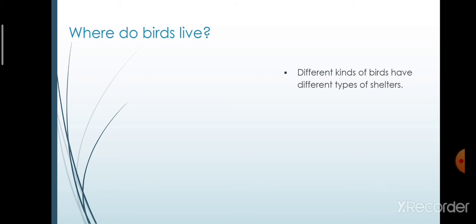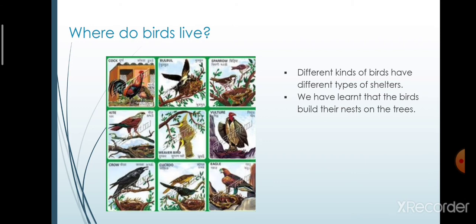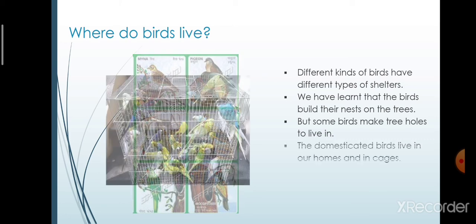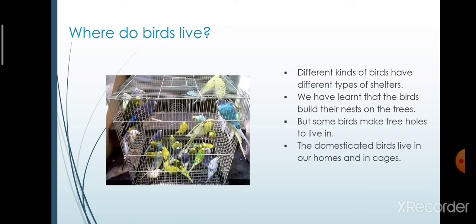Next, we will see where do birds live. Different kinds of birds have different types of shelters. We have learned that birds build their nests on the trees. Examples are: bulbul, sparrow, kite, weaver bird, vulture, crow, cuckoo, eagle, etc. But some birds make tree holes to live in, like parrot and woodpecker. The domesticated birds live in our homes and in cages, like parrots, sparrow, lovebirds, etc.